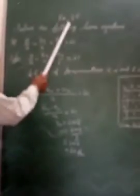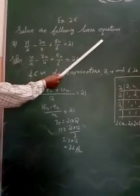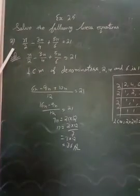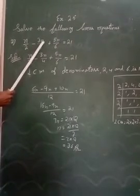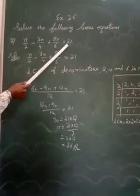To start the exercise 2.5, solve the following linear equation. Linear equation will solve the problem. Question number is n upon 2 minus 3n upon 4 plus 5n upon 6 is equal to 21.